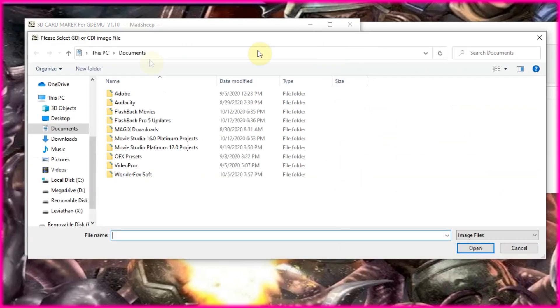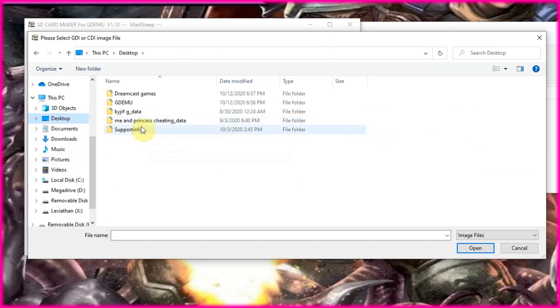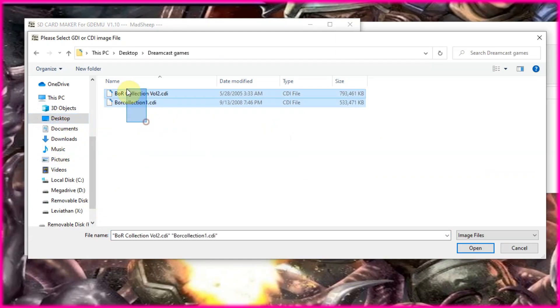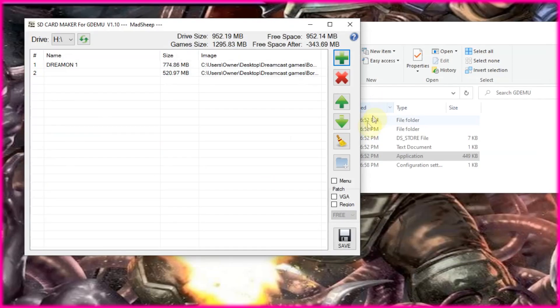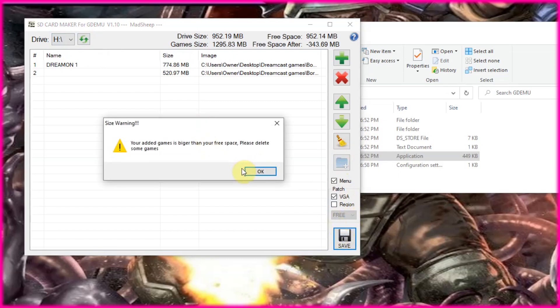So we're going to open the program now. And then we're just going to hit the plus button. And then I've got to locate my games. Not there. Okay, so there they are. And then you just basically hit open. And it's going to start adding them.